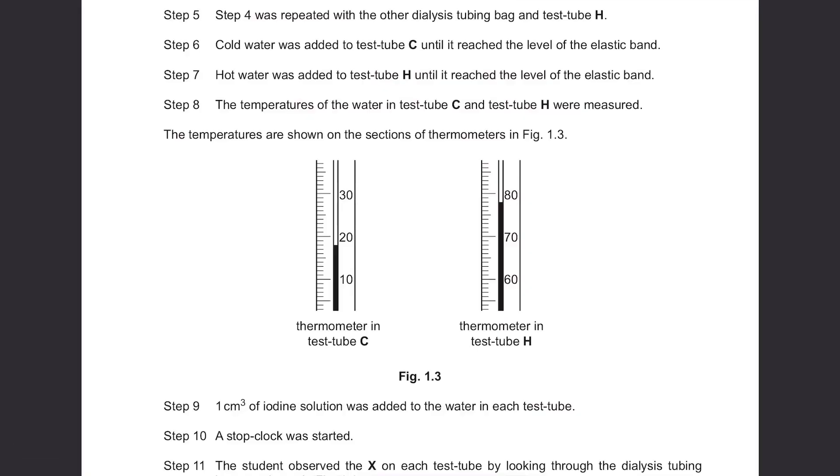Step 5: Step 4 was repeated with the other dialysis tubing bag and test tube H. Step 6: Cold water was added to test tube C until it reached the level of the elastic band. Step 7: Hot water was added to test tube H until it reached the level of the elastic band. Now we have two test tubes with dialysis tubing, one with cold water and one with hot water.